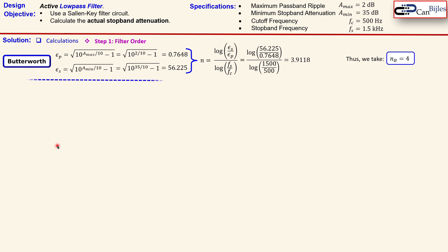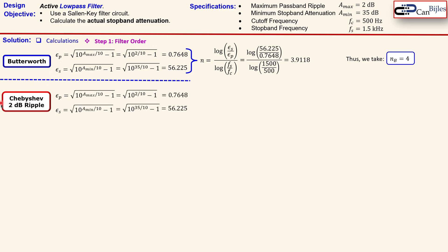Now we do the same process for the Chebyshev response. The epsilon_p and epsilon_s calculations are exactly the same, with 2 dB ripple as required by the Chebyshev characteristics. The only change is in how we calculate the filter order, which uses the inverse hyperbolic cosine function involving epsilon_s, epsilon_p, and the ratio of stopband to cutoff frequency.